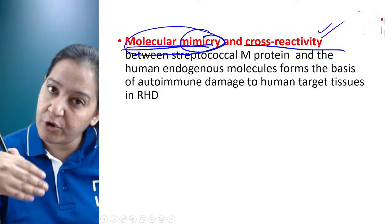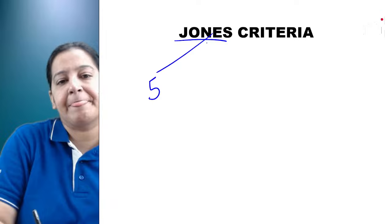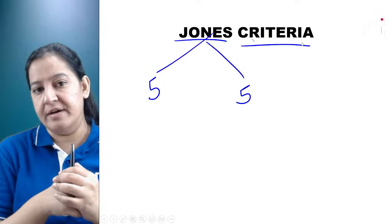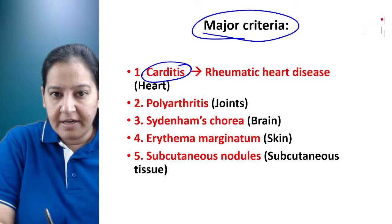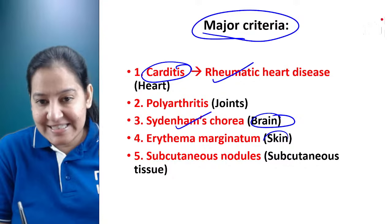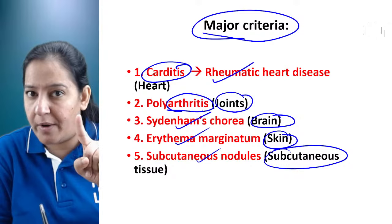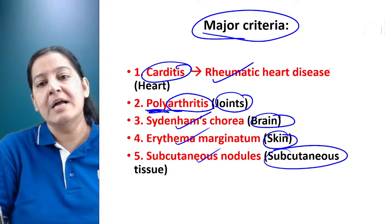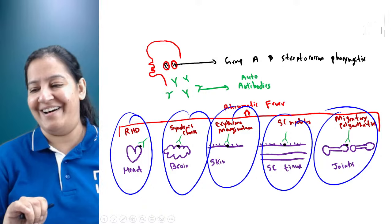Coming to Jones criteria — Jones is the scientist who discovered all this. He gave five major and five minor criteria to diagnose rheumatic fever. The five major criteria correspond to the five diseases in the five organs: rheumatic heart disease (heart), Sydenham's chorea (brain), erythema marginatum (skin), subcutaneous nodules (subcutaneous tissue), and migratory polyarthritis (joints). These five diseases in five organs are the five major criteria.